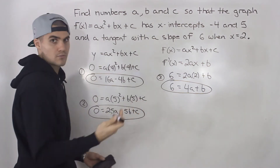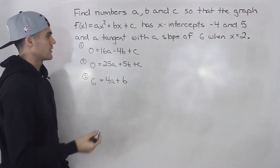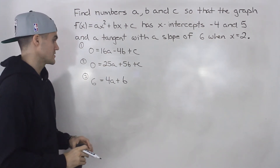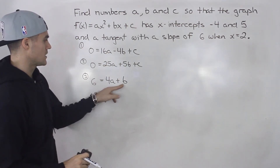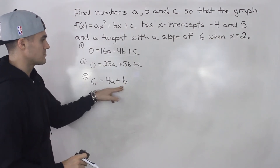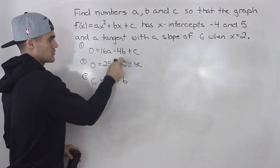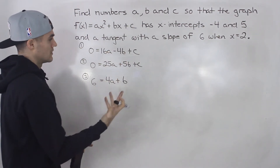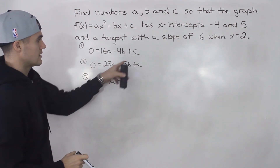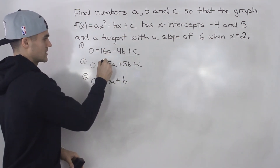So we've got three equations and three unknowns, and now we can solve for a, b, and c. There are a bunch of different ways to do this. Because the c values appear by themselves in equations 1 and 2, I'm going to subtract expression 1 from expression 2 to eliminate c.